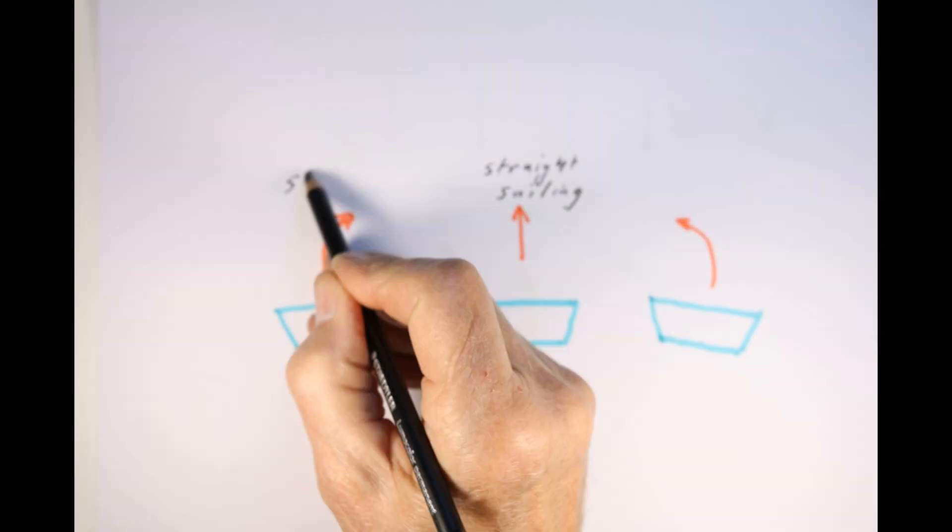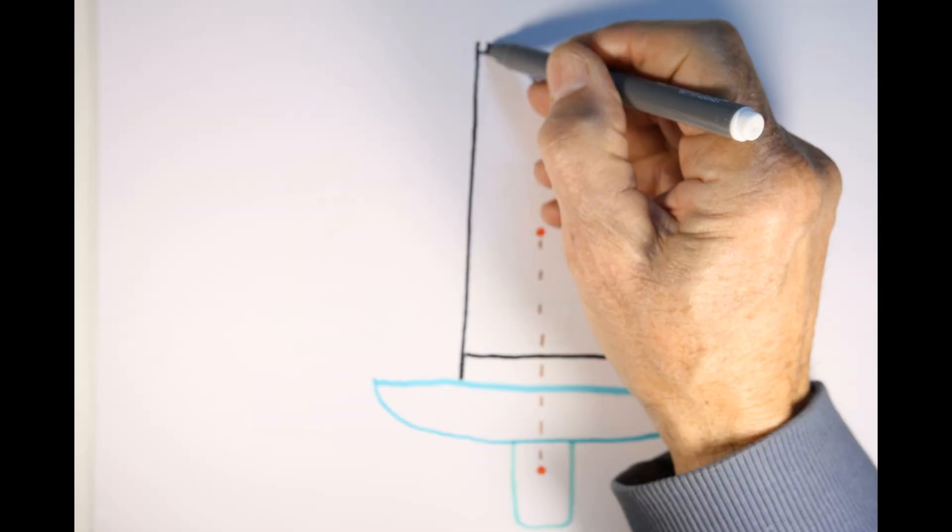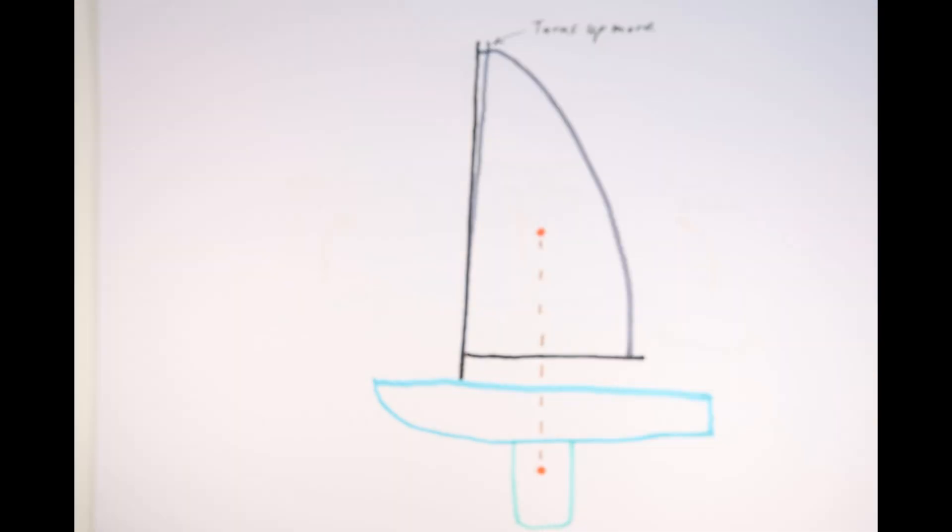While doing the test, the boat must be flat to prevent the hull shape turning the boat. Adjust the mast rake to get this tiller pressure correct.